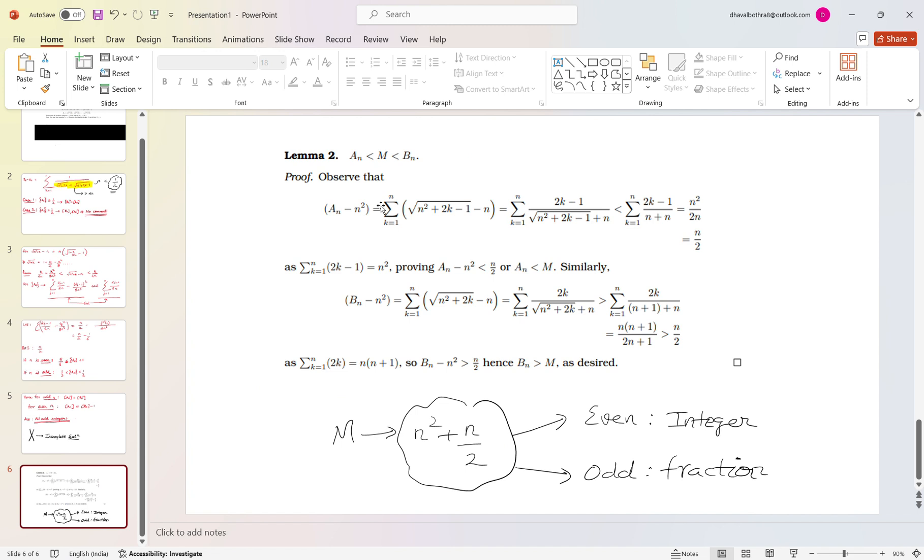Now say if m becomes an integer, suppose m is 6, then we can easily say a_n is less than 6 and b_n is greater than 6, so both will have different GCD. Whereas if m is a fraction, say if m becomes 6.5, because there are only two possibilities for m: m can either be an integer or can be a fraction like 0.5 value type, 6.5 or 7.5 something like that.